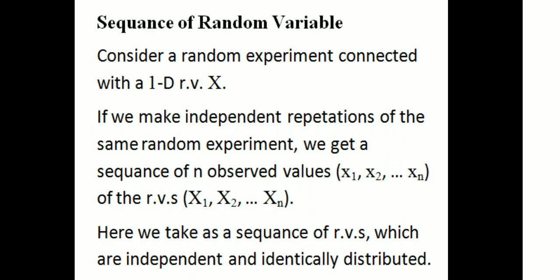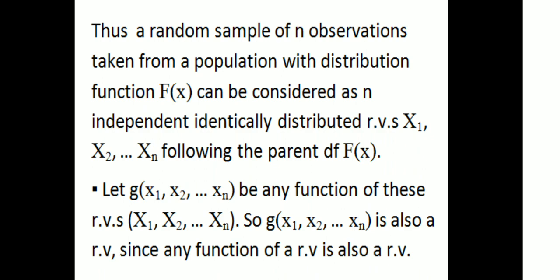We choose a sequence of random variables which are independent and identically distributed. Thus, a random sample of n observations taken from a population with distribution function F(x) can be considered as independent, identically distributed random variables X1, X2, ..., Xn following the parent distribution function F(x).